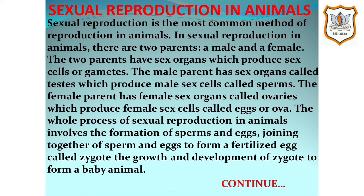Today we are going to start our video with the topic sexual reproduction in animals. Sexual reproduction is the most common method of reproduction in animals. In sexual reproduction in animals there are two parents, a male and a female.